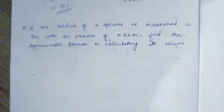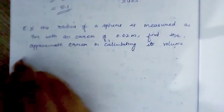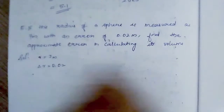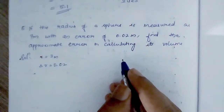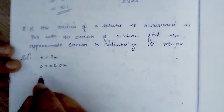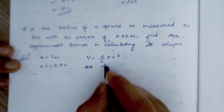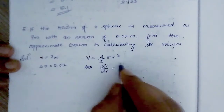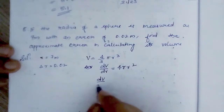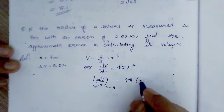The fifth question: the radius of a sphere is measured as 7 meters with an error of 0.02 meters. We need to find the approximate error in calculating its volume. r is given as 7, delta r equals 0.02. Volume v equals 4 by 3 pi r cubed. dv by dr equals 4 pi r squared. At r equals 7, dv by dr equals 4 pi times 49, which is 196 pi.